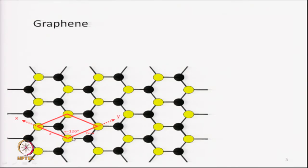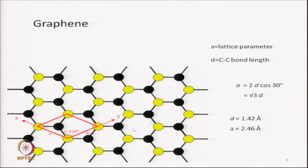A and B are equal, and by simple geometry which we showed in the last video, you can relate the lattice parameter A to the carbon bond length D. The relationship is: the lattice parameter A equals root 3 times the carbon-carbon bond length. In actual graphite or graphene, the carbon-carbon bond length is 1.42 angstroms, which makes the lattice parameter 2.46 angstroms.